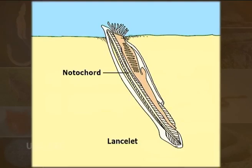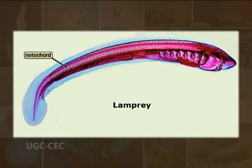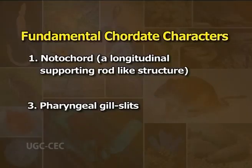The notochord serves as a primitive internal skeleton and acts as a rigid axis but permits movements of the body. It may persist throughout life as in lancelet, lamprey and some fishes, or it may be replaced partially or completely by a backbone or vertebral column.